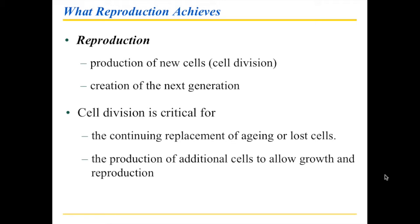The production of additional cells also allows growth and, of course, reproduction. If you're wanting to grow an area in the body — which is critical during development — or when producing cells used in reproduction, those are additional cells, not just reproducing old ones. Cell division is called mitosis, and mitosis is what this first part of the lecture will deal with.